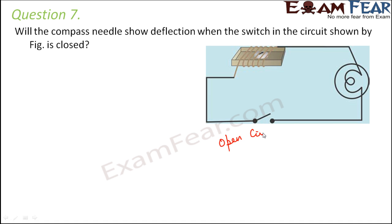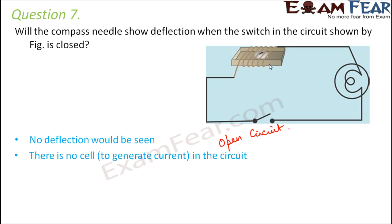When the circuit is open, this is open circuit. In open circuit, there will be no current flowing through it. If there is no current flowing, obviously, there will be no magnetic field produced. And when there is no magnetic field produced, there will be no deflection in the compass needle. So, no deflection would be seen because, first of all, there is no cell to generate current in the circuit.